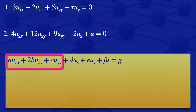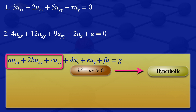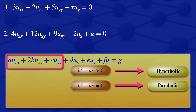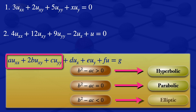We evaluate b squared minus ac. If b squared minus ac is greater than zero, the PDE is hyperbolic. If b squared minus ac equals zero, it is parabolic. If b squared minus ac is less than zero, the PDE is elliptic.